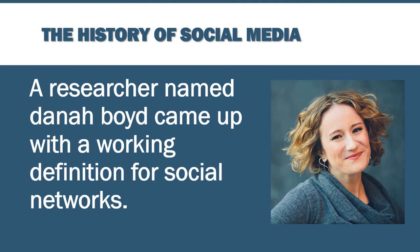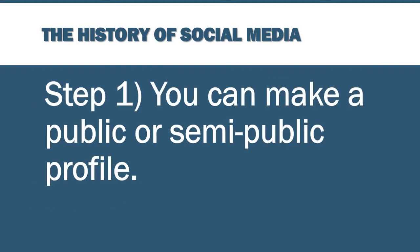A researcher by the name of danah boyd — who legally has her name lowercase, that's not a typo — came up with a working definition for social networks as they were starting to get very big and popular. She had the idea that we ought to have a working definition so that when we research and study this stuff, we're all talking about the same thing. The three steps of the danah boyd definition: step one, you can make a public or semi-public profile. You're allowed to have a page or account that is yours, that you can customize — put a picture of yourself, describe what you like, the books you like to read, the movies you like to watch, the video games you like to play. You can make it all about you.